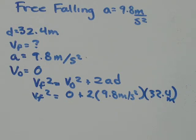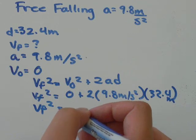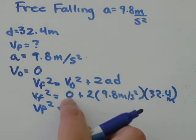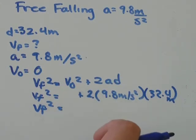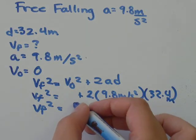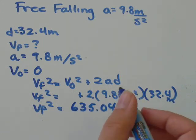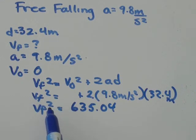And all you have to do is simplify that down until you have VF. So zero, I'm just going to pretend that that's not there, because zero is just nothing. 2 times 9.8 times 32.4. That's equal to 635.04. So that's what VF squared is equal to.